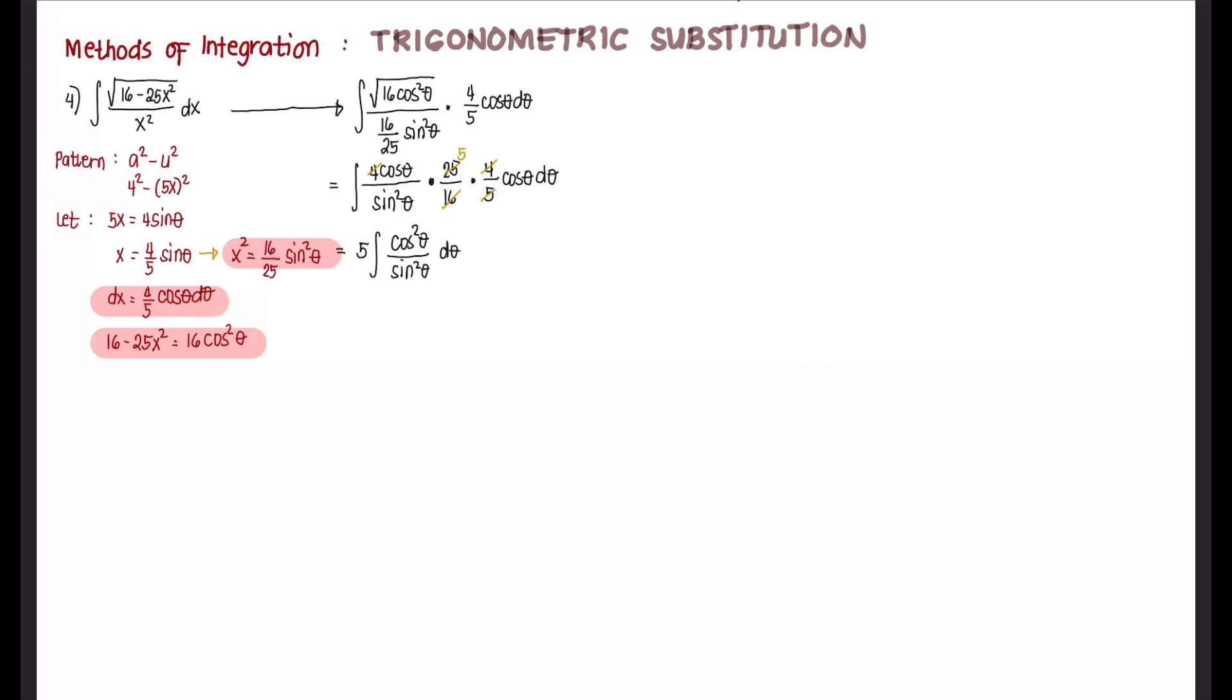But cosine over sine is cotangent. So that's cotangent squared theta d theta. There is no integration rule for cotangent squared theta. So we can use our identity to express this in terms of cosecant. 5 integral, cotangent squared theta is cosecant squared theta minus 1, d theta.